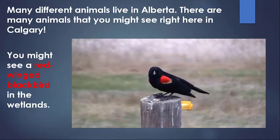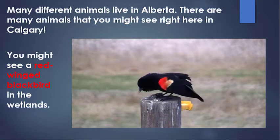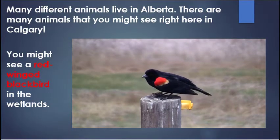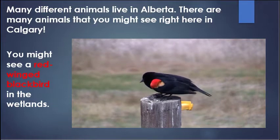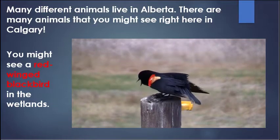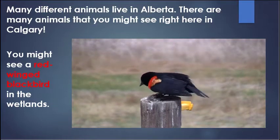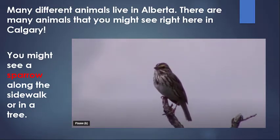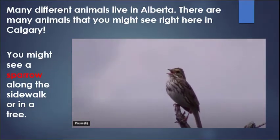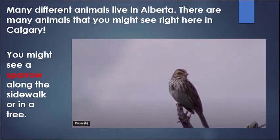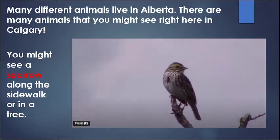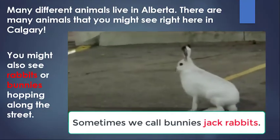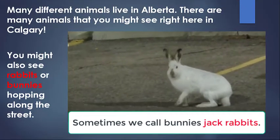You might see a red-winged blackbird in the wetlands. You might see a sparrow along the sidewalk or in a tree. You might also see rabbits or bunnies hopping along the street.